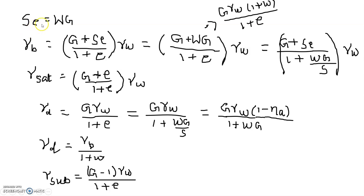The first formula is: Se equals Wg. Here, S is the degree of saturation, e is the void ratio, W is the water content, and G is the specific gravity.